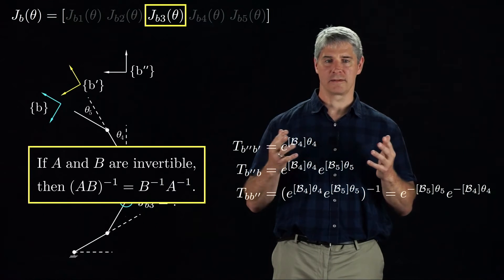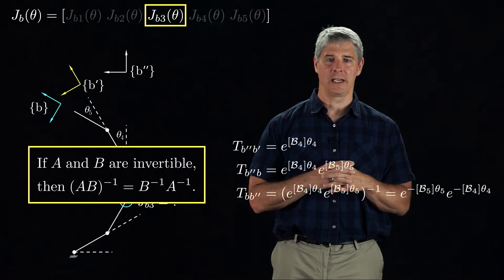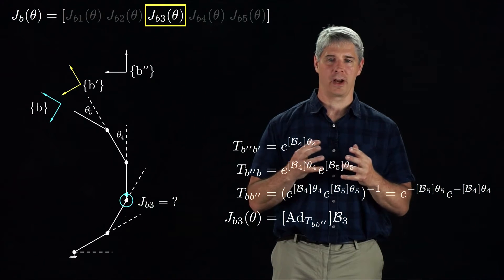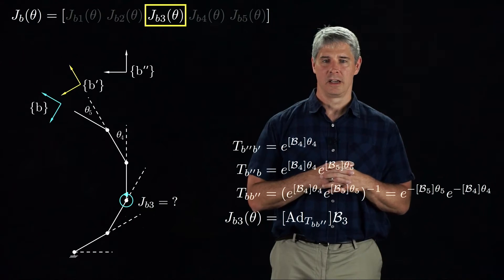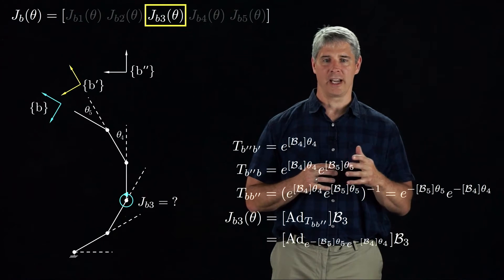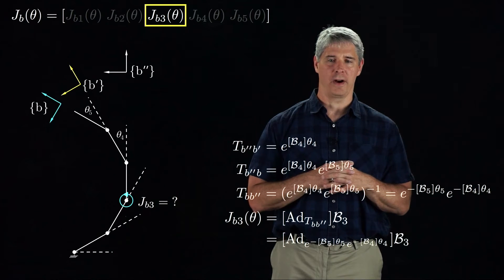Since the screw axis of joint 3 is just B3 in the B'' frame, to find Jb3, we just need to use our rule for changing the frame of reference of a twist. The final expression for the Jb3 column depends on the screw axis for joint 3, as well as the joint angles and screw axes for joints 4 and 5.